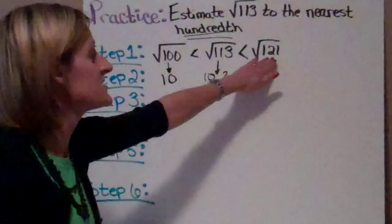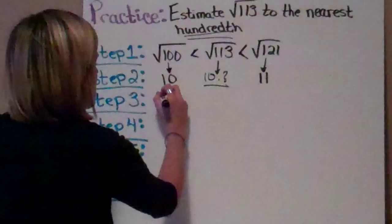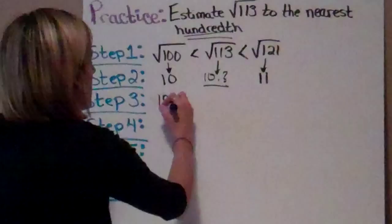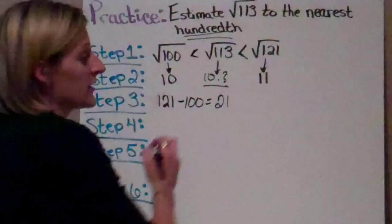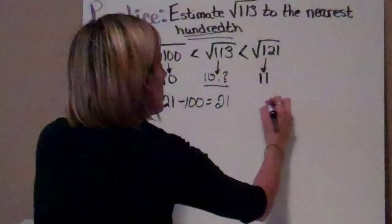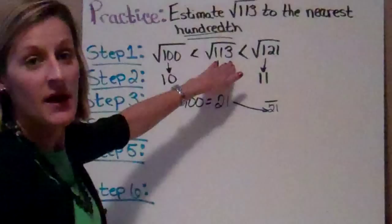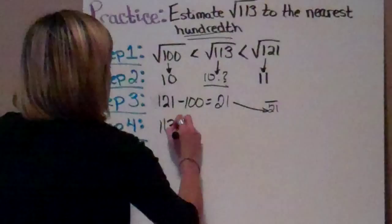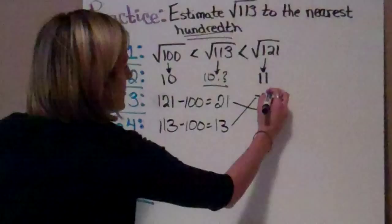Step 3: I'm going to take the largest perfect square and subtract the smallest. So I'm going to do 121 minus 100, and that's going to give me 21. This is going to be my denominator. Step 4: I subtract the one I'm estimating from the smallest perfect square. 113 minus 100 equals 13, and this is going to be your numerator.